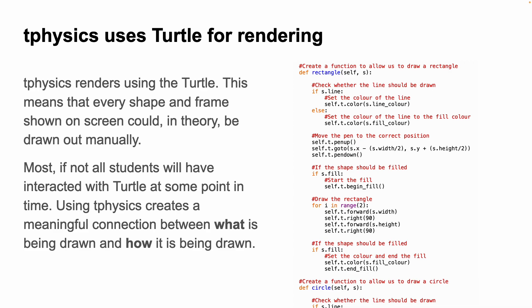The last really important thing I did with T-Physics is make it render using turtle. We use pen up, pen down, t.forward, t.right to draw rectangles — it's essentially turtle with extra steps. We hide the turtle, disable the tracer so things appear animation-like, and between each frame we clear the screen and draw a new one. Every frame of a game in T-Physics could be manually drawn out using the turtle. Since most students will have interacted with turtle at some point, this creates a real connection — there's no magic going on, they understand that moving shapes around the screen means manipulating physics, which is then rendered using the turtle.